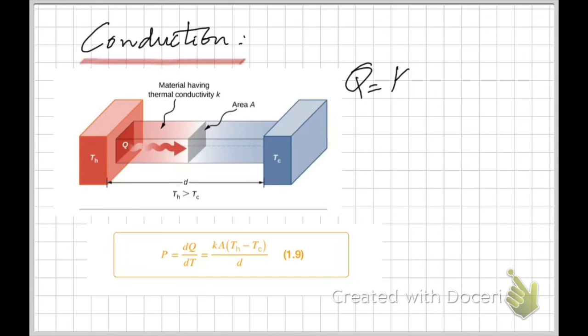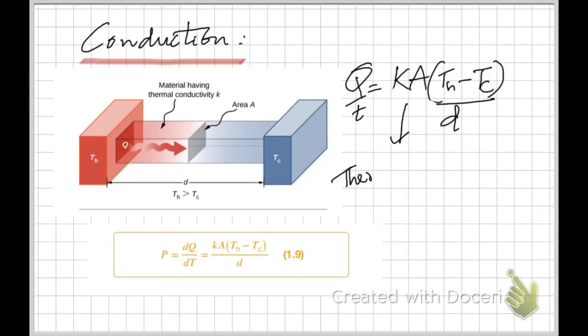The formula for heat conducted is given by Q/T = K × A × (Th − Tc) / D. Here, Q is the quantity of heat conducted and T is the time in seconds.